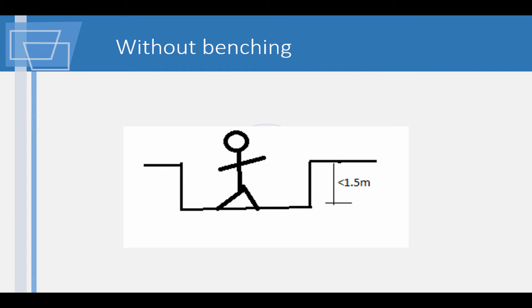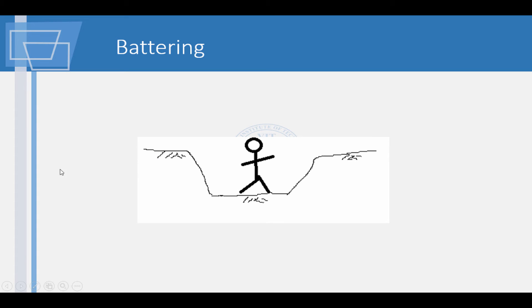This is done by battering and benching. When slopes are made along the sides of cut, it is called battering. These slopes prevent soil collapse. Side slopes are determined based on the principles of soil mechanics.